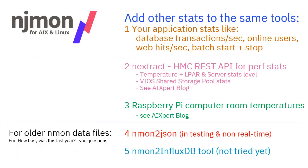One word of warning: once you have a time series database and a graphing tool like this, you'll suddenly think, hang on, we could put a lot of other useful stuff in here. Perhaps you have things like transaction rates from your database, web hit rates, online user counts, batch start and stop times — all of that could be added to the same database so you can compare computer performance to the real work it's doing for users. My N-Extract tools that pull data from the HMC REST API — like temperature, server stats, and shared storage pool stats — could all go in there too. Even a Raspberry Pi gathering computer room temperatures can go into the same database.